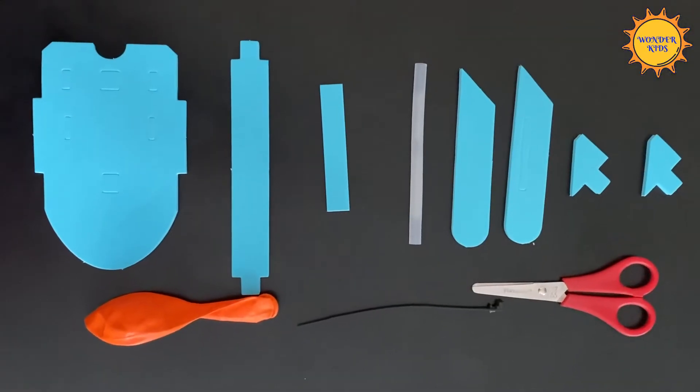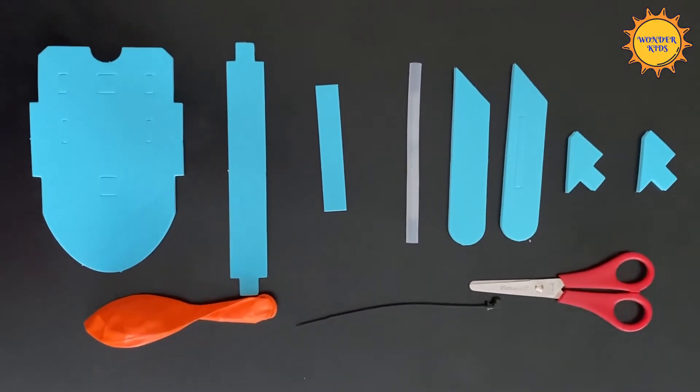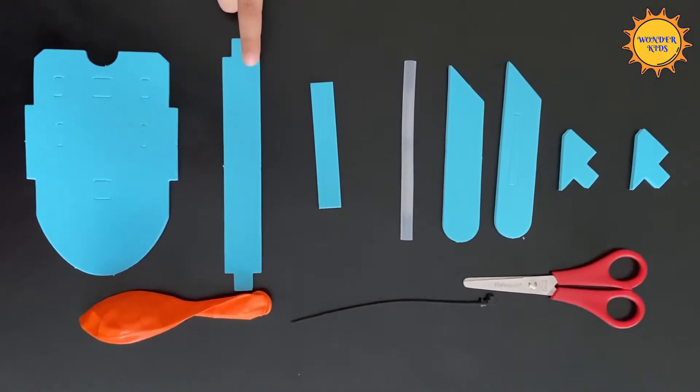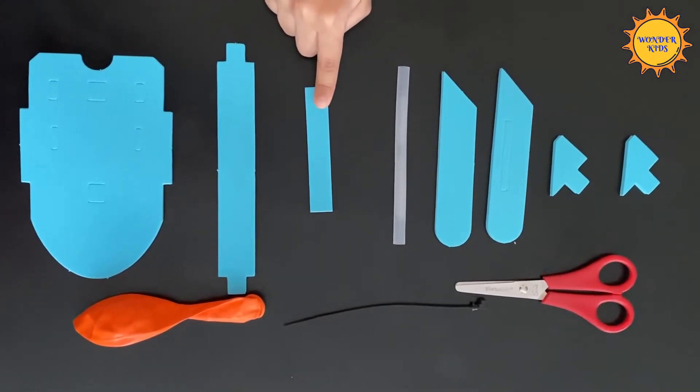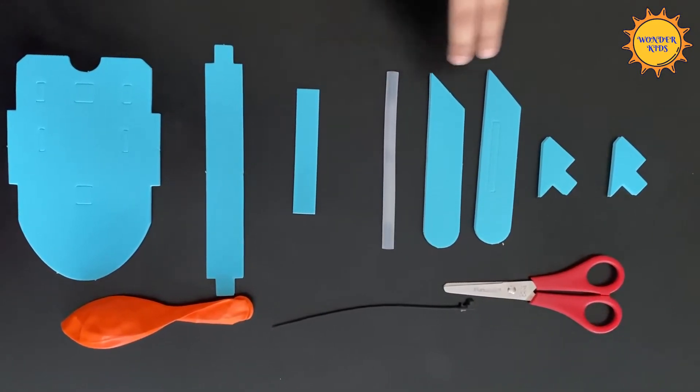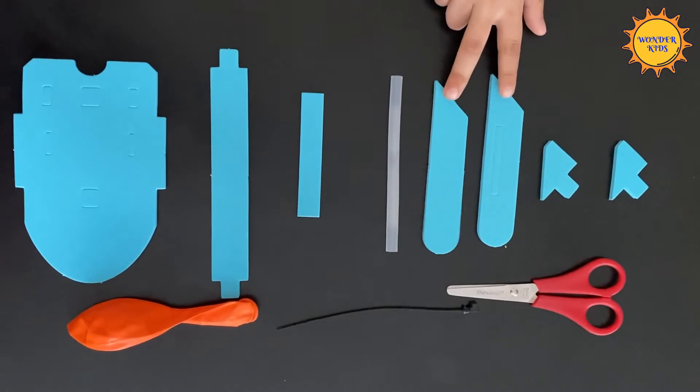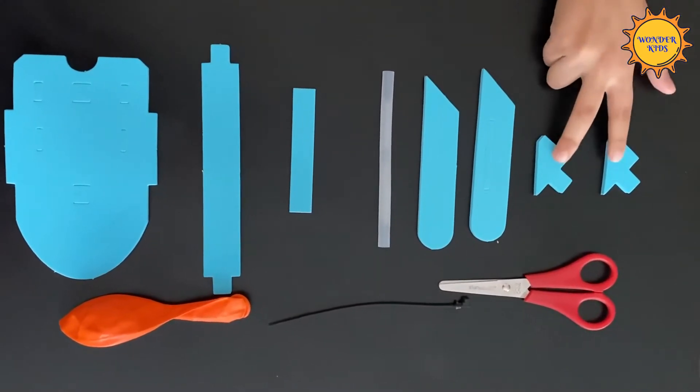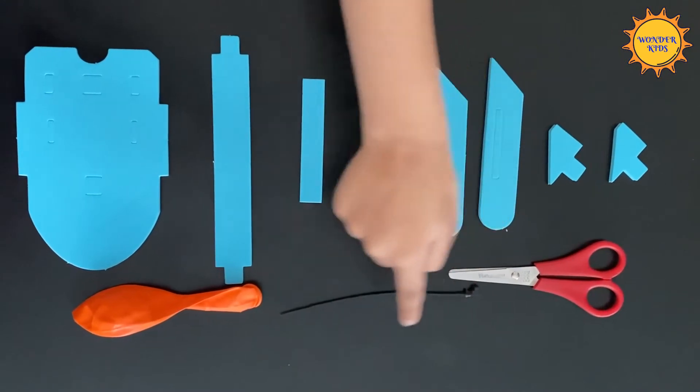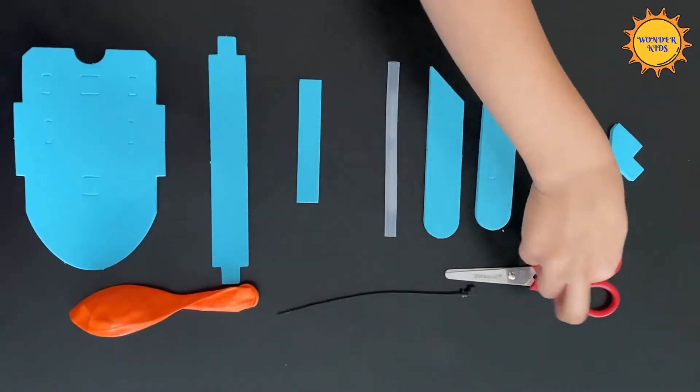To make the airboat, you will need flat base, back base, foam strip, plastic tube, two side pieces, two fins, a zip tie, a balloon, and scissors.